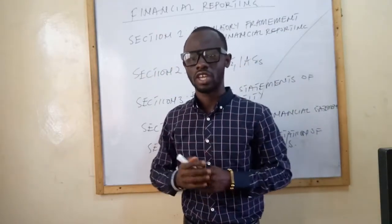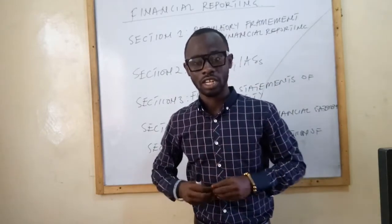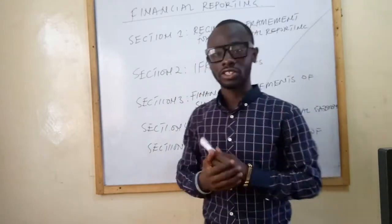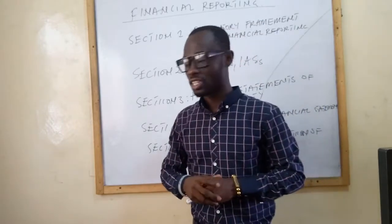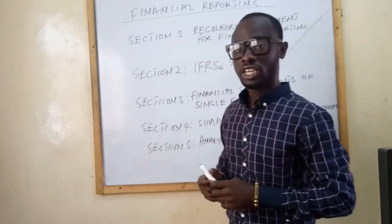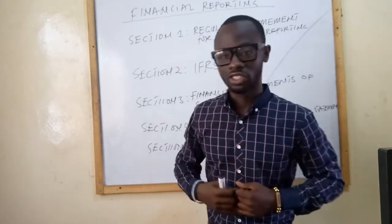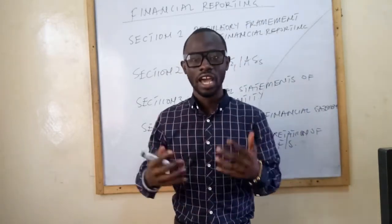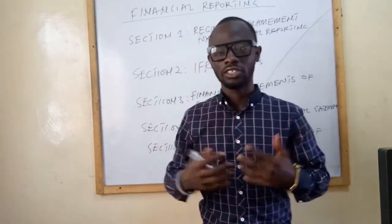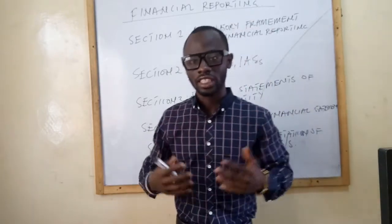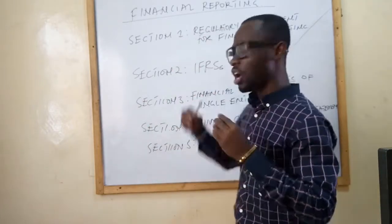From there we will come to Section 2, which is one of the key aspects of the syllabus, where we talk about the various accounting standards — the International Financial Reporting Standards and International Accounting Standards. We will deal with IAS 16, IAS 17, IAS 20, IAS 23, IAS 12, IAS 8, IAS 2, IAS 38, IAS 36, and IAS 40, among all the standards you need to understand.